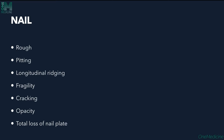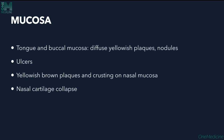Nail involvement shows roughness, pitting, longitudinal ridging, fragility, cracking, opacity, and sometimes total loss of nail plate. Mucosal involvement includes tongue and buccal mucosa with greyish diffuse plaques, ulcers, and cartilage collapse of the nose.